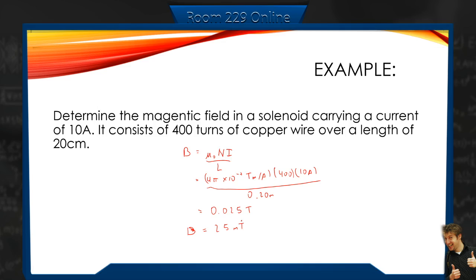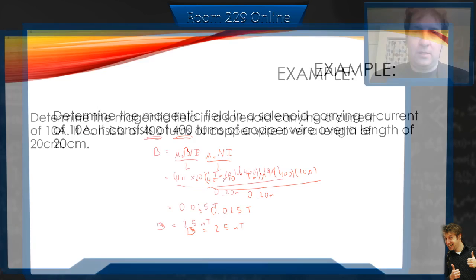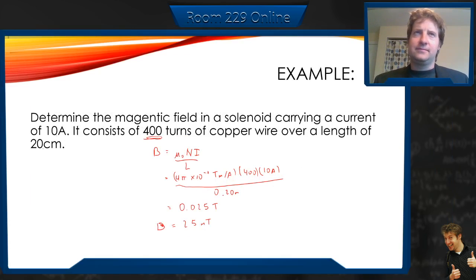I was able to use two significant digits because this 400 is an exact integer — it's how many turns, not a measurement. The 20 and the 10 we're assuming have two significant figures. So 10 amps, which is a significant amount of current in a solenoid, only generates 25 milliteslas. Hopefully Ampere's law didn't scare you too much — it's a way we can use to come up with all these equations we saw already. So let's go on now to Faraday's law.